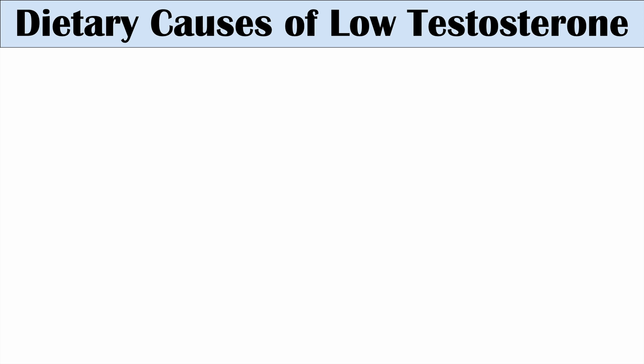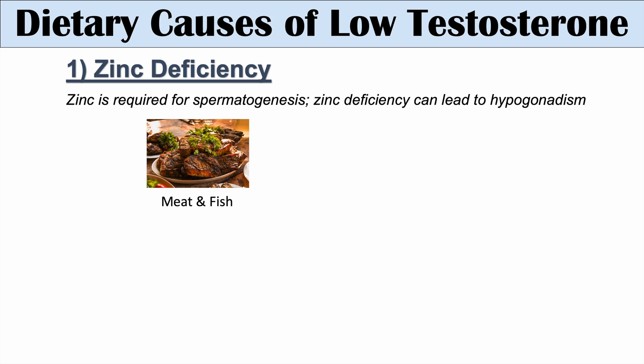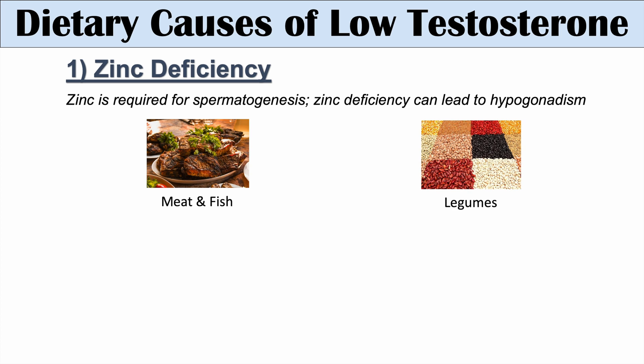We're going to talk about five different deficiencies that can lead to a low testosterone level. The first is zinc deficiency. Zinc is required for spermatogenesis — the production of sperm — and zinc deficiency can lead to hypogonadism, meaning low gonadal functioning or low functioning of the testes. Zinc can be obtained from meat, fish, and legumes.